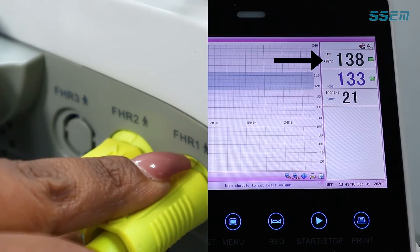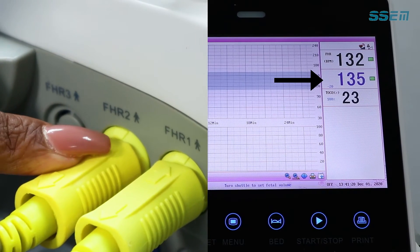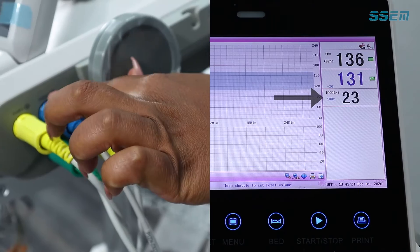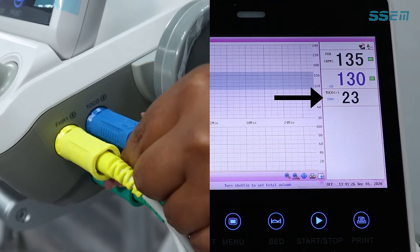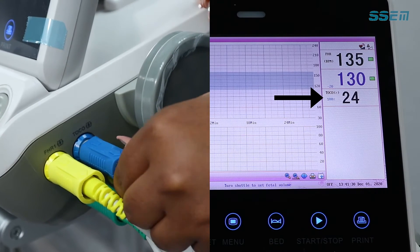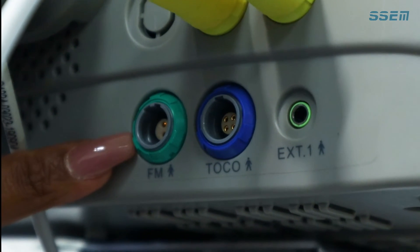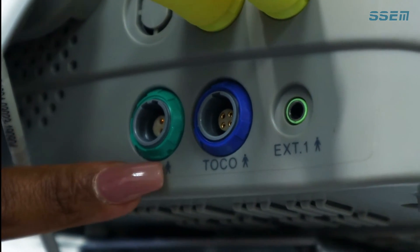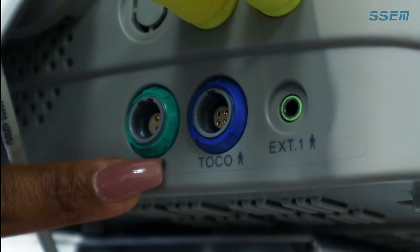This is FHR 1. This is the connection for FHR 2 on the device. This is the Toco connection on the device. It is also color coded and it's blue. And then your fetal movement marker is also color coded and this is where you would connect it.